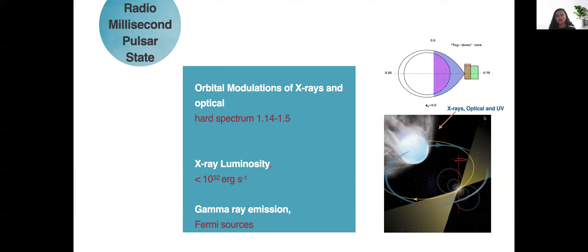This shock then gives rise to x-ray emission, optical emission and UV. If you're looking at this emission in different wavebands for example in x-rays you would see a hard spectrum emission with a spectral index of about 1.14 to 1.5 and you would also see gamma ray emission that is arising from the same intra-binary shock. If you're looking at the top-down view of this system for example the observer could be either at 0.25 or 0.5 or 0.75 you would be sampling different parts of this intra-binary shock leading to a sinusoidal optical emission.